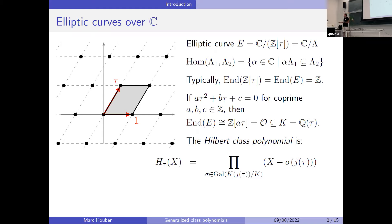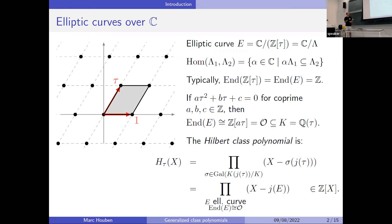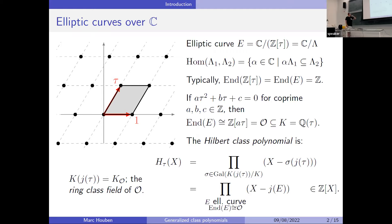The conjugates of j(tau) are precisely the j-invariants of the other elliptic curves with endomorphism ring isomorphic to 𝒪. It turns out this is a polynomial with integer coefficients, which is pretty cool. This polynomial H_tau(x) only depends on 𝒪, so people also denote it H_𝒪(x) or H_D(x), where D is the discriminant of 𝒪. The field k(j(tau)) is called the ring class field of 𝒪, and the Galois group over k is isomorphic to the ring class group of 𝒪, so the degree of the Hilbert class polynomial is always the class number of 𝒪.